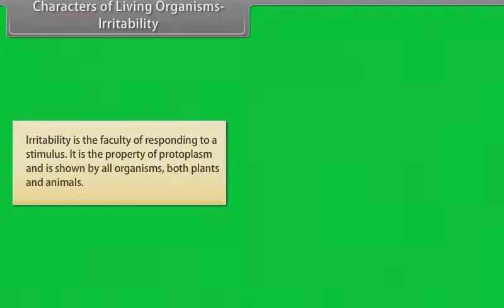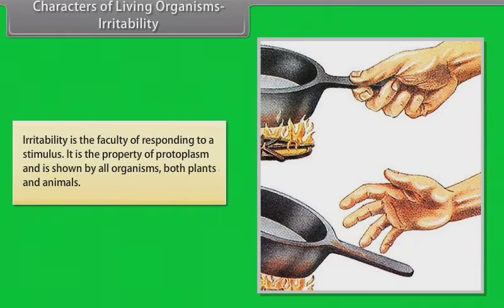Characters of living organisms - Irritability: Irritability is the faculty of responding to a stimulus. It is the property of protoplasm and is shown by all organisms, both plants and animals.